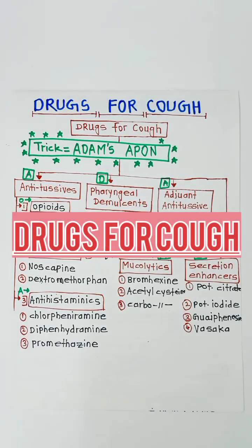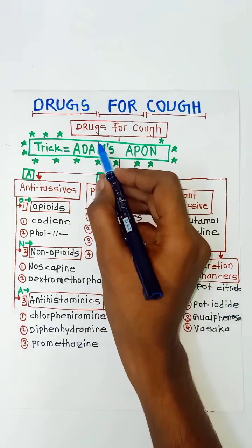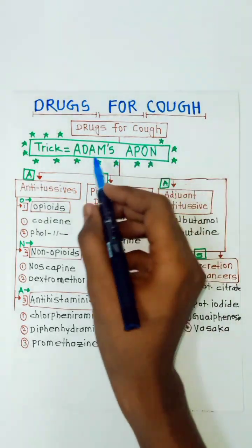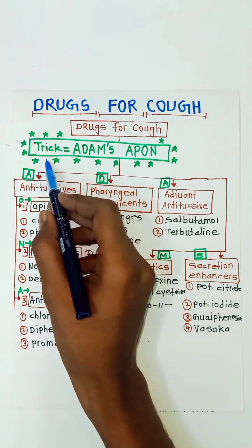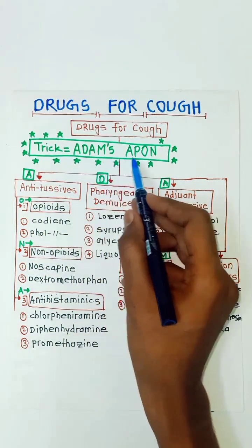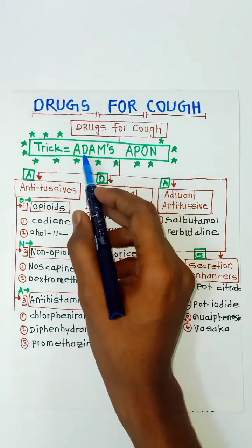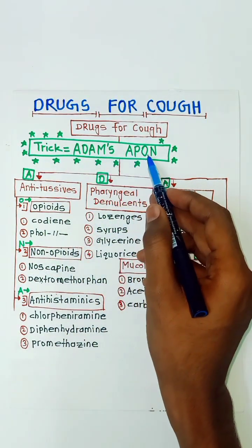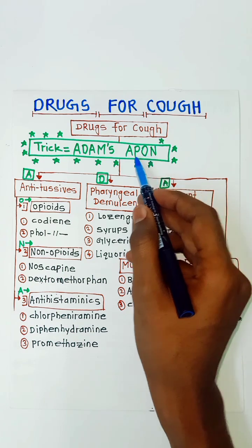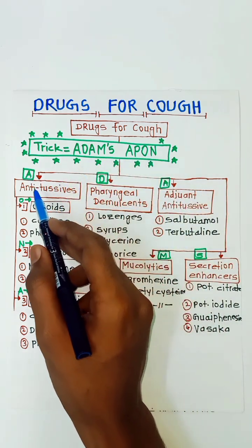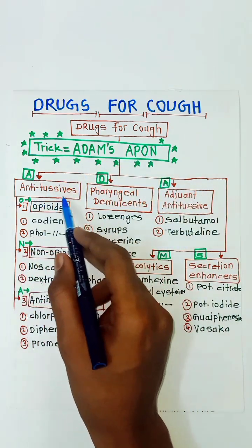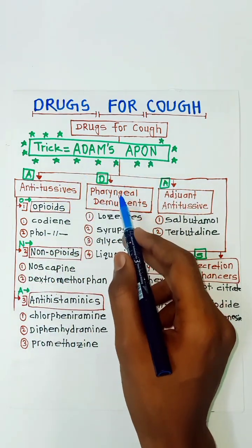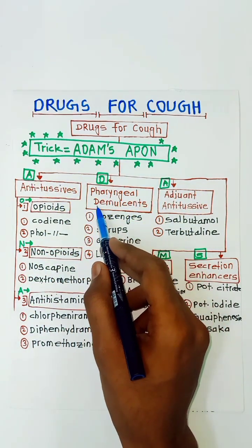Hello guys, I am Sudarshan. Today's topic is drugs for cough. The trick to remember is 'Adam's PON' — like Adam's apple, the thyroid cartilage we all know. So A is for antitussives and D is for pharyngeal demulcents.